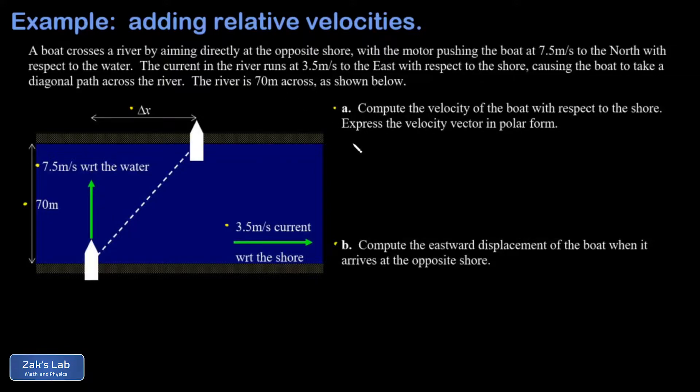What we've learned about relative velocities is they simply add if you do it in the right order. I can say the velocity of the boat with respect to the shore - I write v with a subscript of boat slash shore. The velocity of the boat with respect to the shore is equal to the velocity of the boat with respect to the water plus the velocity of the water with respect to the shore.